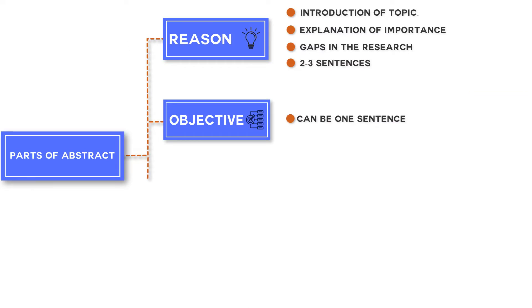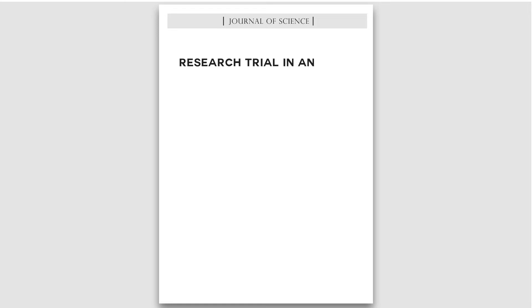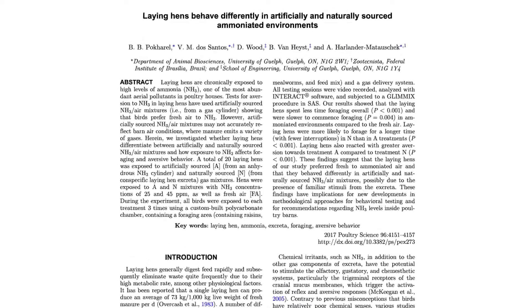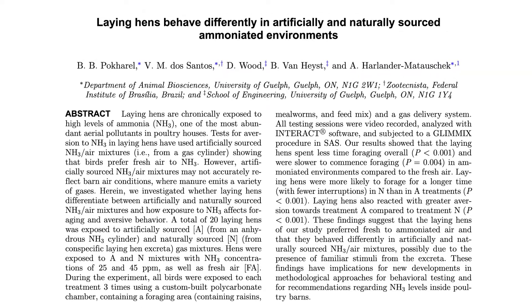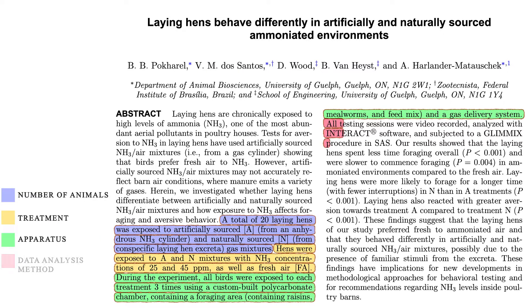The third thing you need to include in your abstract is the methodology. In this section you describe what method and approach you used for this study. For example, if it is a research trial in animals you can include number of animals, sampling techniques used, trial design, and data analysis methods that were used for the study. Let's look at this example. You can see the methods used where the authors have included number of animals, treatments, apparatus, and data analysis method in this highlighted section.